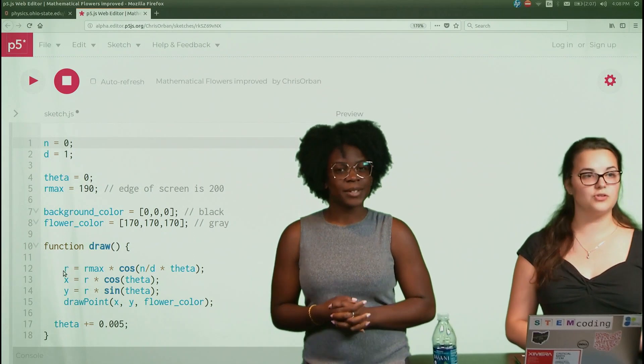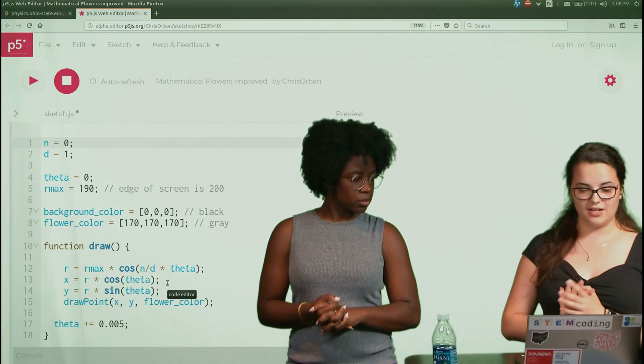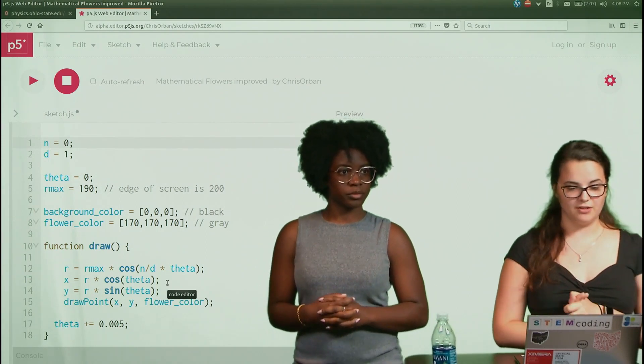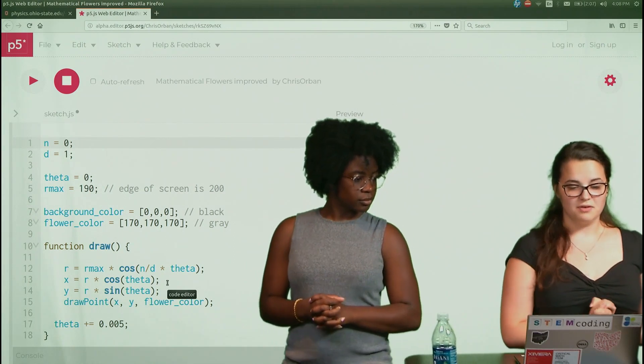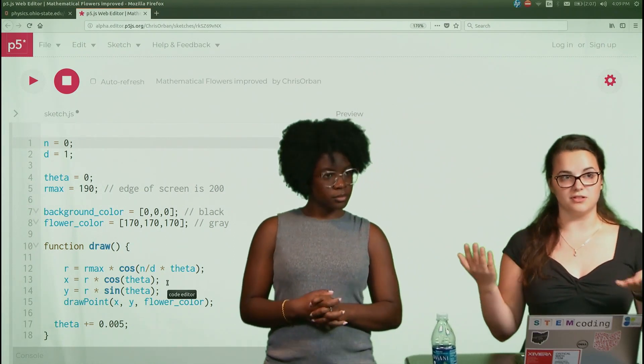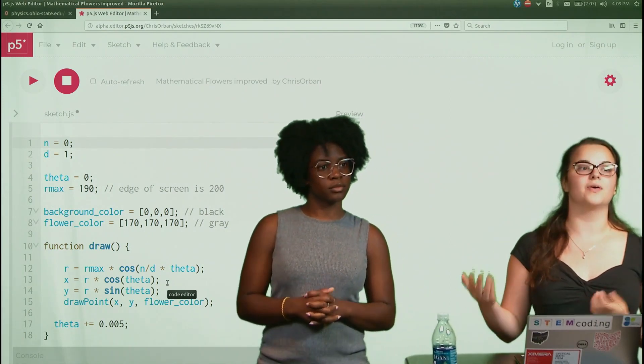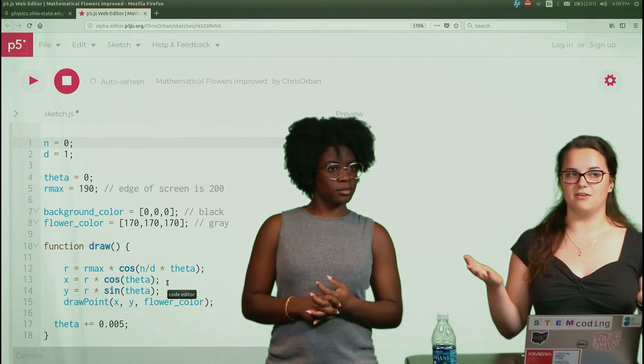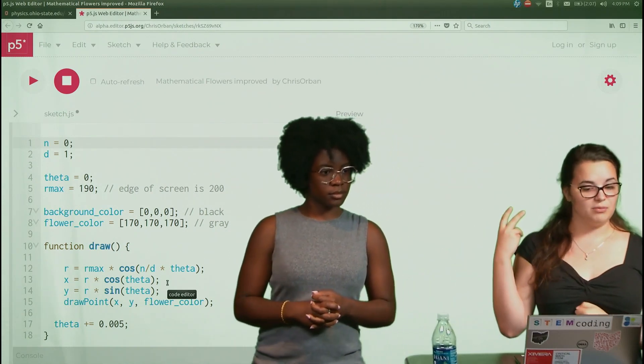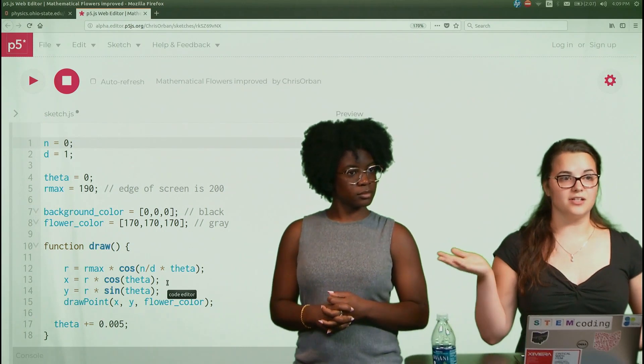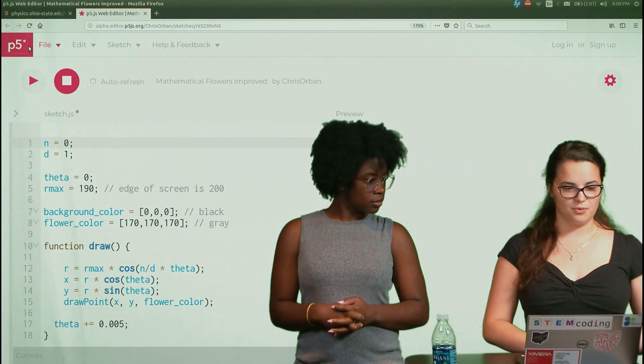Okay, I'm going to zoom it in. So going back to our line where it defines R, we said that it's equal to R max times cosine of n over d times theta. If our n is equal to 0, the inside of cosine is automatically going to be equal to 0, since we are multiplying times 0. And we know that cosine of 0 is 1. So that should pretty much be the same as if we would get rid of cosine function entirely. So that would be the same as that R is equal to R max. So we are supposed to get a circle. So let's check if that's what we get.